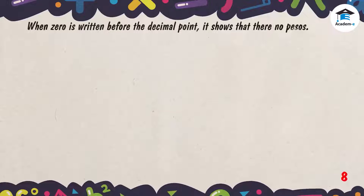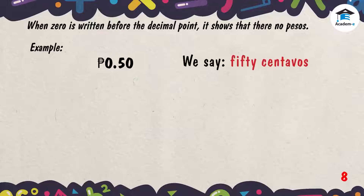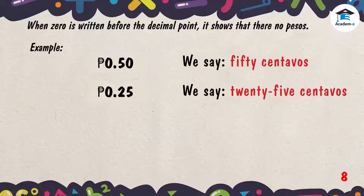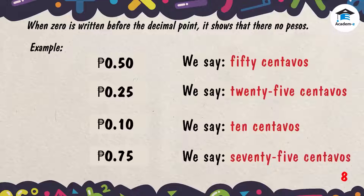When zero is written before the decimal point, it shows that there are no pesos. For example: we say 50 centavos. Second example: 25 centavos. Third example: 10 centavos. Fourth example: 75 centavos.